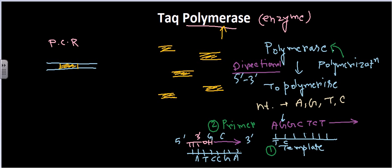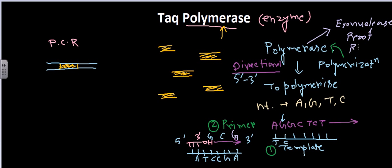Sometimes the polymerase brings wrong nucleotide sequences — for example, instead of T it brings G, which is a mismatch. When it provides this kind of erroneous nucleotide, there is a mechanism in polymerase called exonuclease activity, also called proofreading activity. It can cleave the erroneous nucleotide out, then bring the correct one and keep on synthesizing.